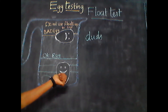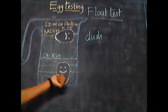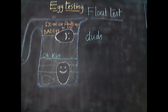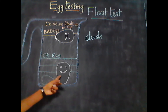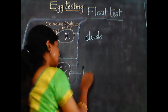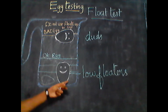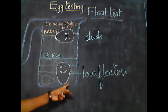Eggs where 90 to 95 percent of the egg is under the water surface are called low floaters, which are viable and can develop into embryos.